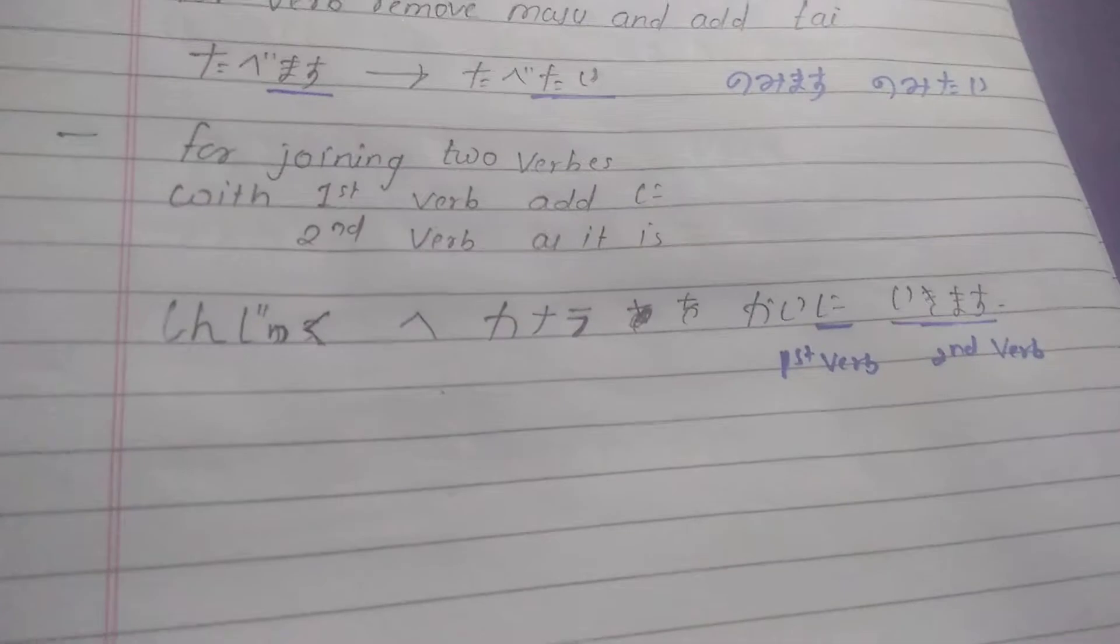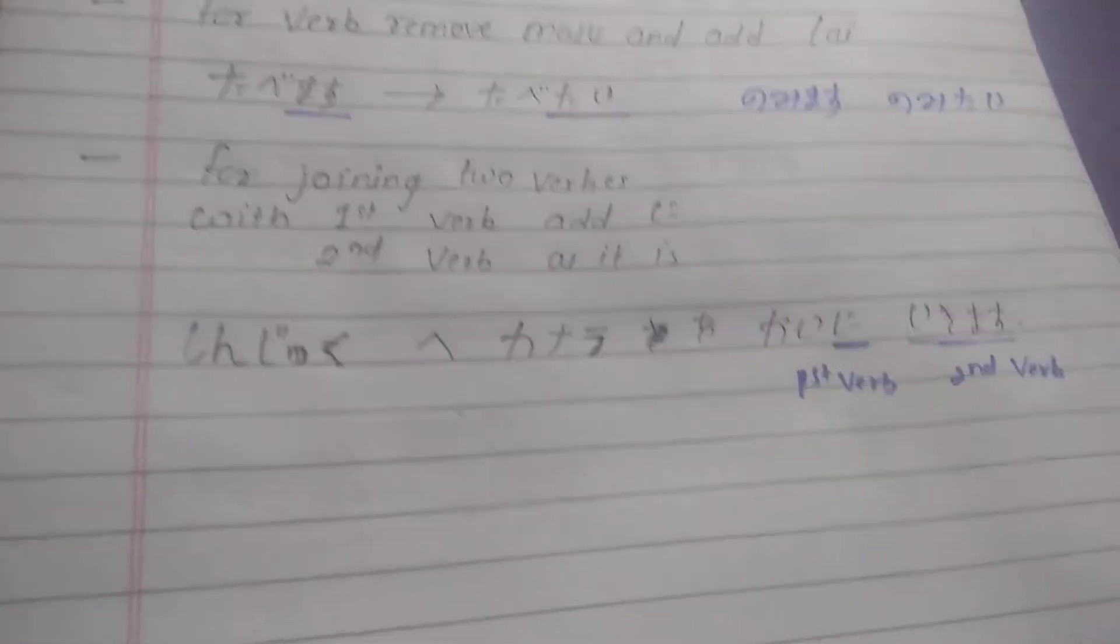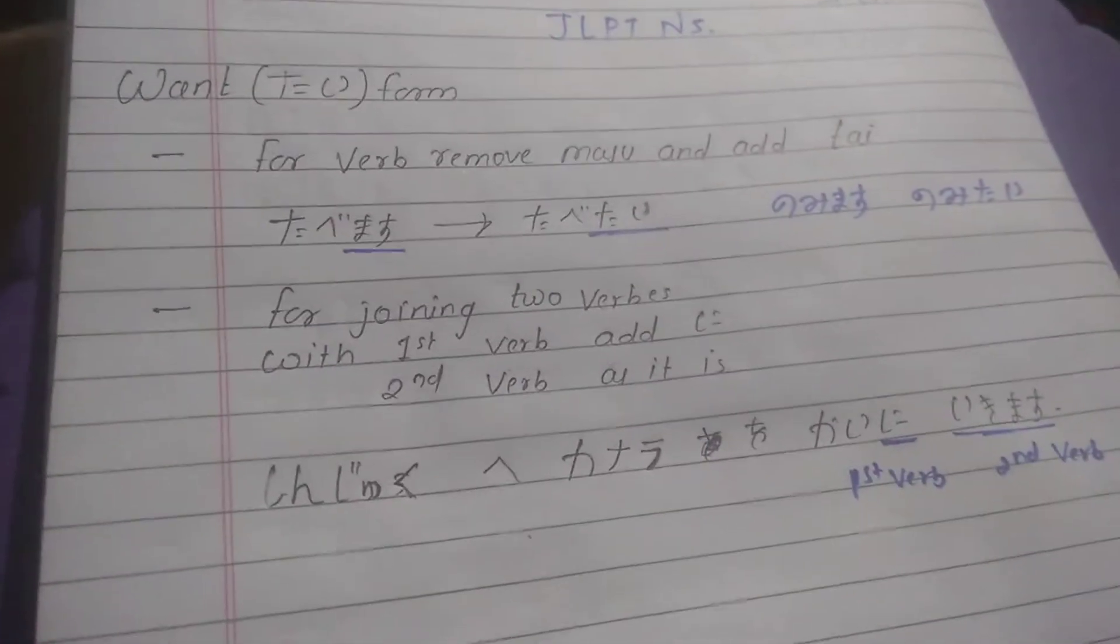...kai ni - kaimasu becomes kai ni, and ikimasu stays as it is. So that's it for the want form. Thank you so much for watching.